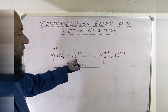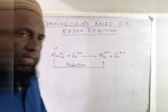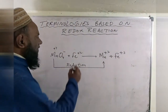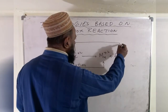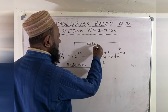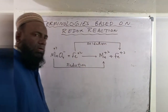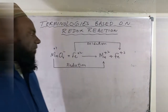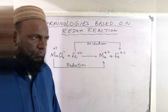Now looking at Fe: it goes from +2 to +3. The charge is increasing, so this is oxidation. This process is called oxidation. Now there are two more terms: Reducing Agent and Oxidizing Agent.